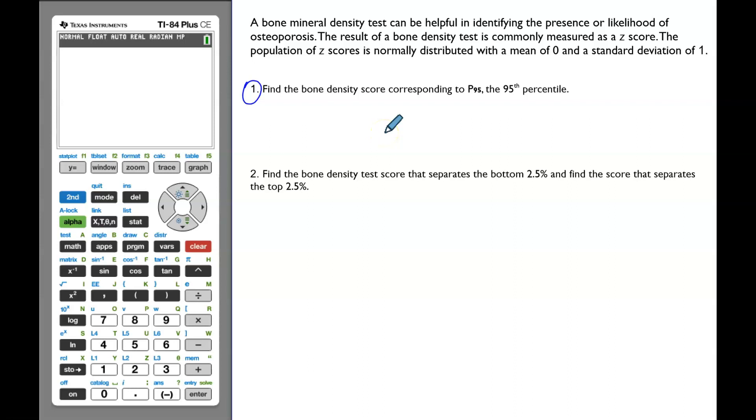The first question is to find the bone density score corresponding to P95 or the 95th percentile. Remember, percentile is the mark that separates the lowest 95% from the highest 5%. So, we will be looking for the z-score that separates the area of 95% to the left of that z-score.